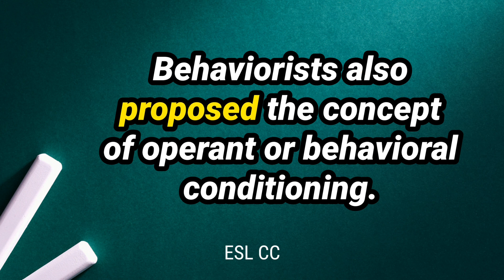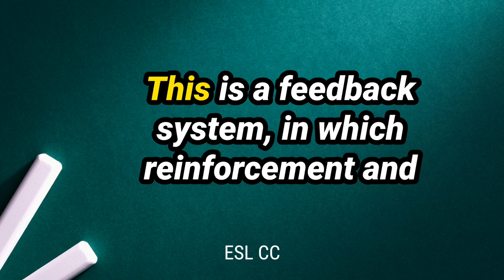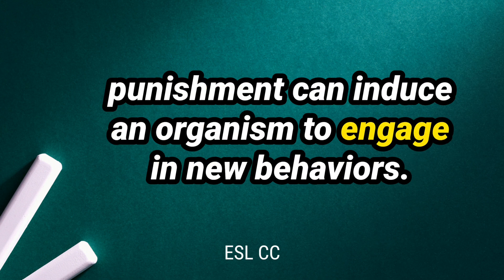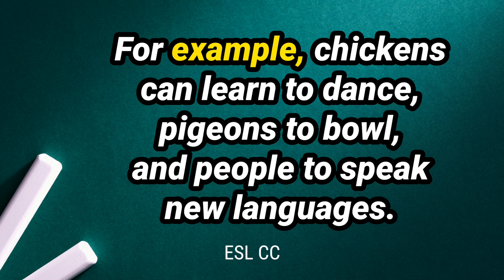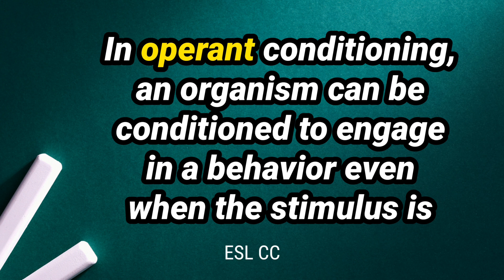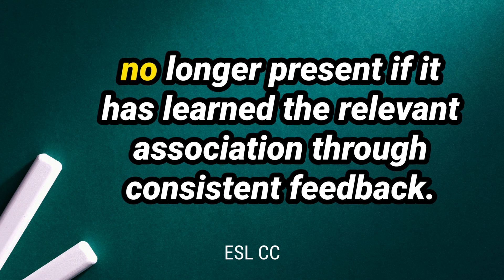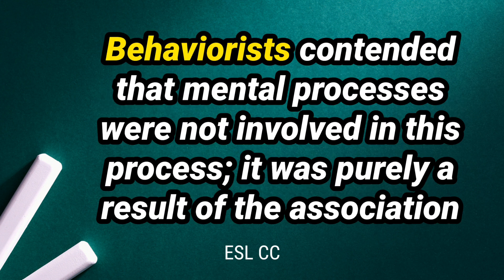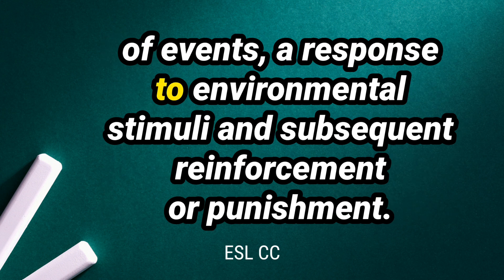Behaviorists also proposed the concept of operant or behavioral conditioning. This is a feedback system in which reinforcement and punishment can induce an organism to engage in new behaviors. For example, chickens can learn to dance, pigeons to bowl, and people to speak new languages. In operant conditioning, an organism can be conditioned to engage in a behavior even when the stimulus is no longer present if it has learned the relevant association through consistent feedback. Behaviorists contended that mental processes were not involved in this process.